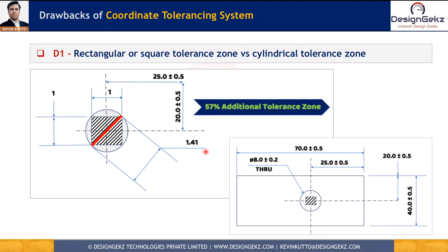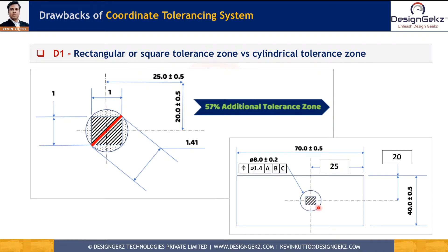Now let's understand how GD&T solves this problem. In GD&T, I can locate the true axis of this hole with the basic dimensions of 25 and 20, and the actual variation with respect to this true location can happen within a diameter of 1.4. The tolerance zone is now cylindrical instead of square or rectangular. This simple change results in 57% more tolerance zone compared to the square or rectangular zone, meaning all functional parts previously rejected will now be acceptable as good parts, saving a lot of cost.